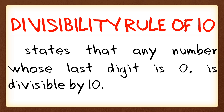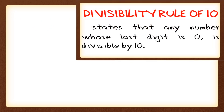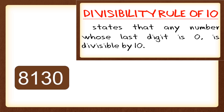Let's get started with some examples. Here I have 8,130. Just look at the last digit of the number — if it is 0, it is divisible by 10. In this number, the last digit is 0, so 8,130 is divisible by 10.